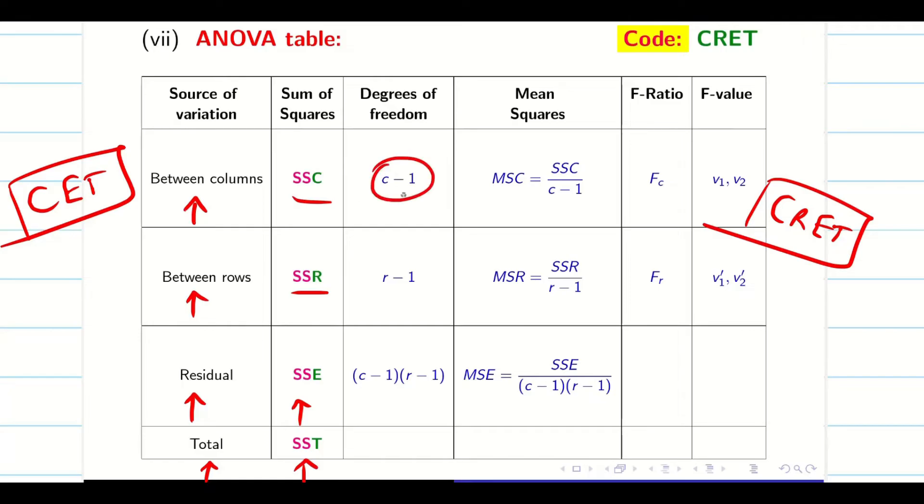For column, degree of freedom is C minus 1. For row, degree of freedom is R minus 1. For the residue or the error, it is going to be column minus 1 into R minus 1. Now I am going to analyze in two ways. So I say FC is for column, FR is for row.